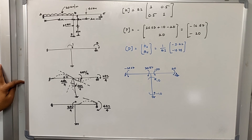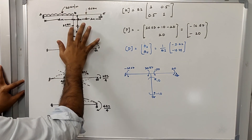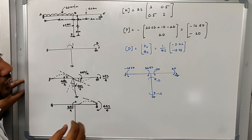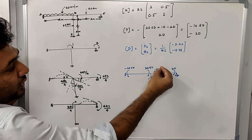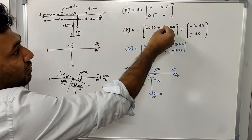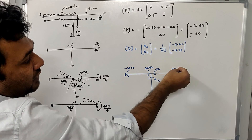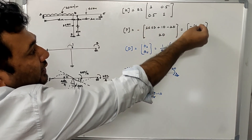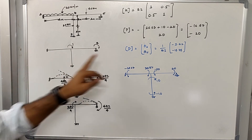The next step is to determine the force matrix by finding the fixed end moments due to loading: 20 kN/m UDL, 40 kN/m UDL, and a 20 kN horizontal load. The fixed end moments at joint B sum to 26.67 + 10 − 20, and at joint C the summation is 20. Applying the negative sign convention to this matrix gives the force matrix.